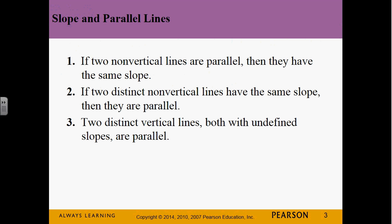Now, what if you don't have a slope? Well, two distinct vertical lines are also parallel. So if they're both vertical, neither one of them have a slope, right, because slope is undefined for a vertical line. But two vertical lines are parallel.